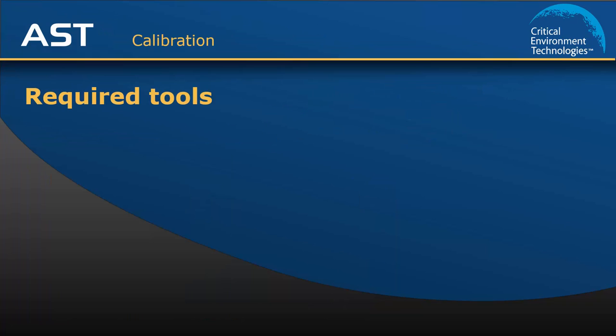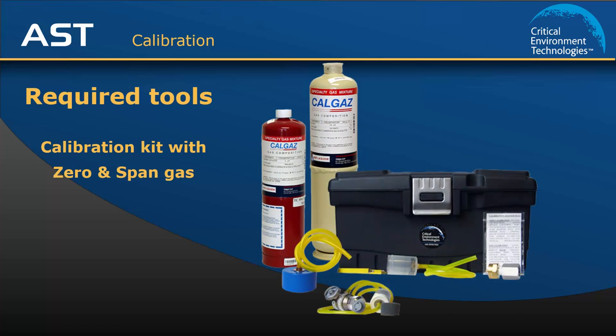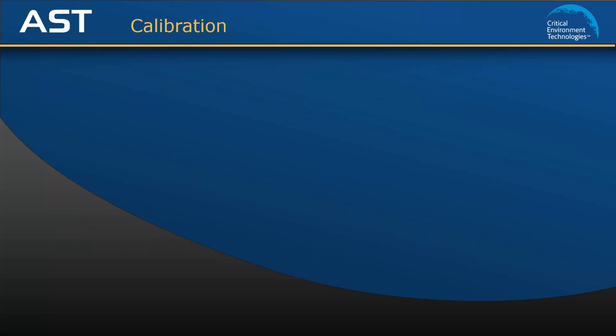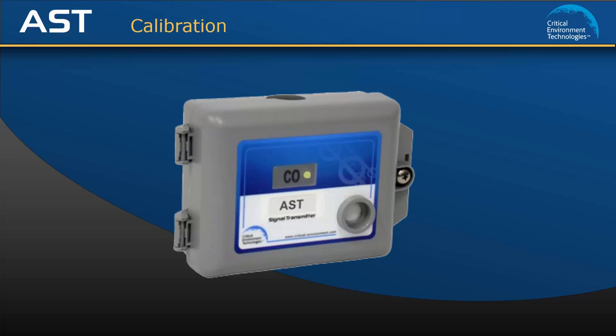To calibrate the AST you will need a calibration kit, gas cylinders with a sufficient amount of the correct concentration and type of gas, and a voltmeter with hook-on leads. It is also important that you make sure the sensor you are calibrating has not passed its life expectancy. In this demonstration I am using an AST with an electrochemical CO sensor.